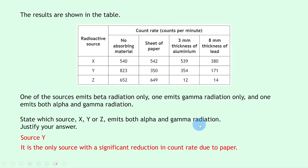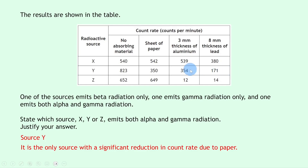We can verify that source Y also contains gamma. With aluminium between source Y and the detector, the count rate is 354. When the aluminium is swapped for lead — which absorbs gamma radiation — the count rate drops from 354 to 171, a significant reduction confirming that gamma rays are being absorbed by the lead. So to conclude, the answer is source Y.